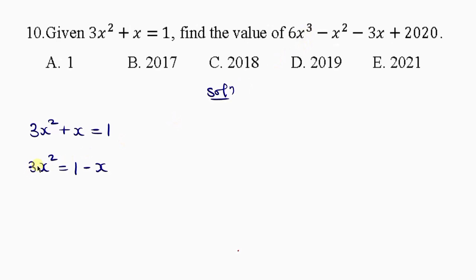Now because I'm seeing 6x cubed here, I'm going to multiply this 3x squared by a value that would give me 6x cubed. If I multiply this by 2x, it's gonna give me 6x cubed. So 2x multiplied by 3x squared, and remember, whatever I do to the left, I must also do to the right. So let's do that to the right as well by using 2x to multiply 1 minus x.